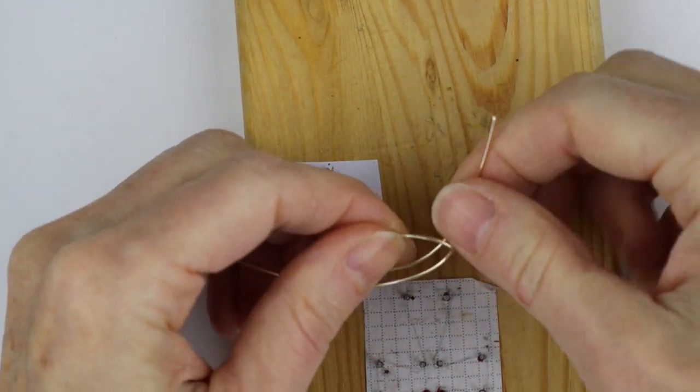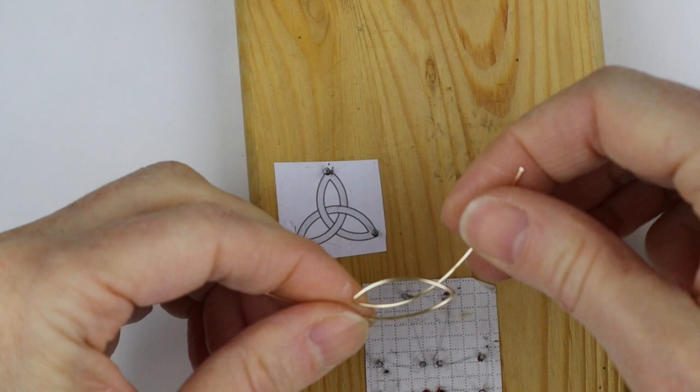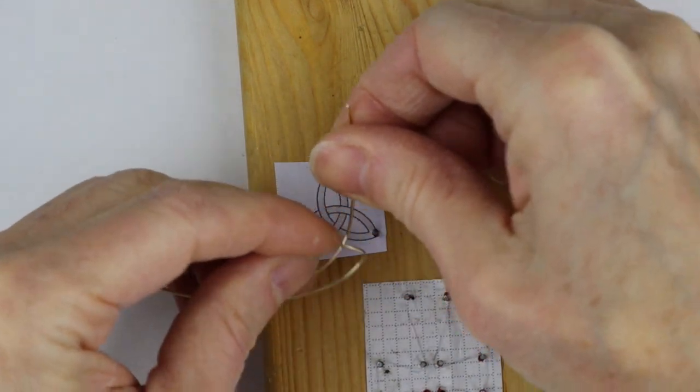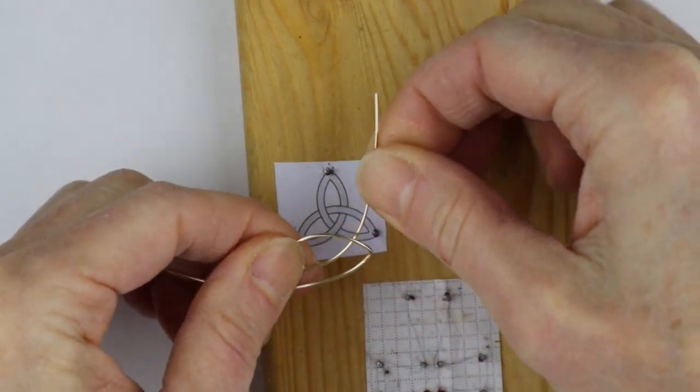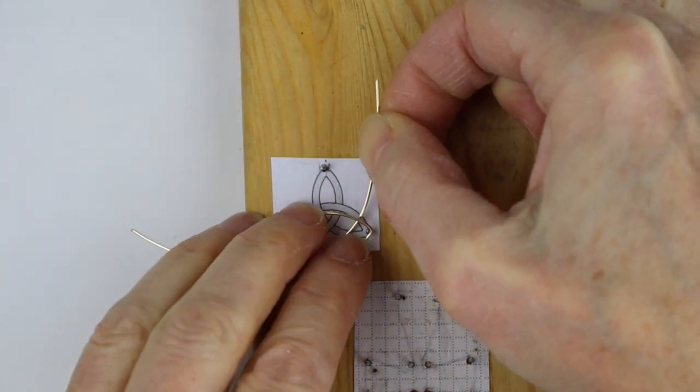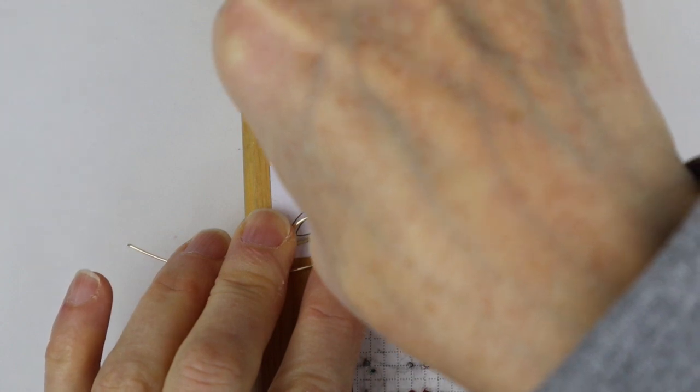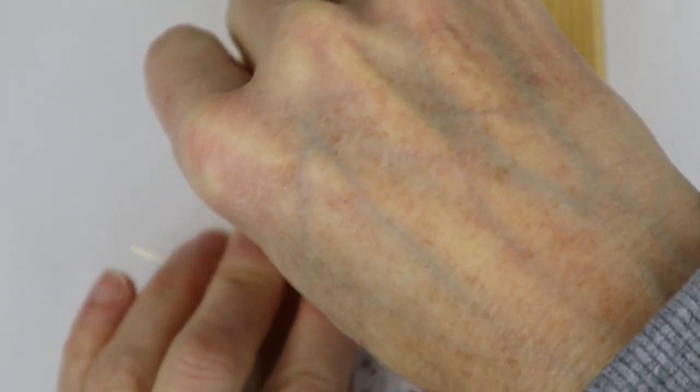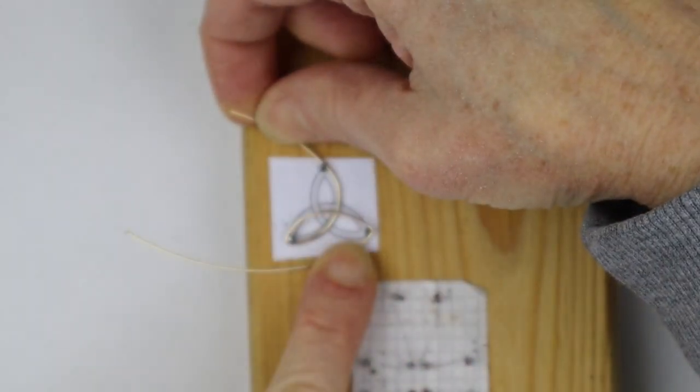And then this one too, we're going to just sharpen up that bend a little bit by sticking our flat pliers here. And then what we can do is put this back on the template. You might have to bend it a little more, and then bring this wire around to the top.